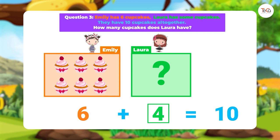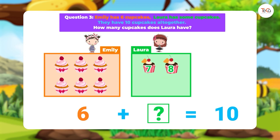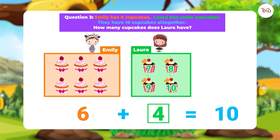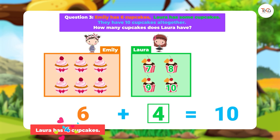If you don't remember the addition facts, you can draw more cupcakes and count on until you get ten. Then count the number of cupcakes you've just drawn to find the answer. We've just drawn four more cupcakes. So we answer: Laura has four cupcakes.